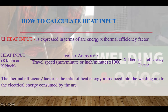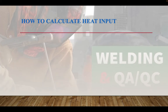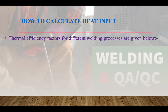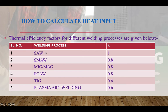The thermal efficiency factor is the ratio of heat energy introduced into the welding arc to the electrical energy consumed by the arc. Thermal efficiency factors differ by welding process: SAW (submerged arc welding) is 1.0; SMAW (shielded metal arc welding) is 0.8; MIG and MAG is 0.8; FCAW is 0.8; TIG is 0.6; and Plasma is 0.6. This factor must be applied for the specific process when calculating heat input per EN standards.